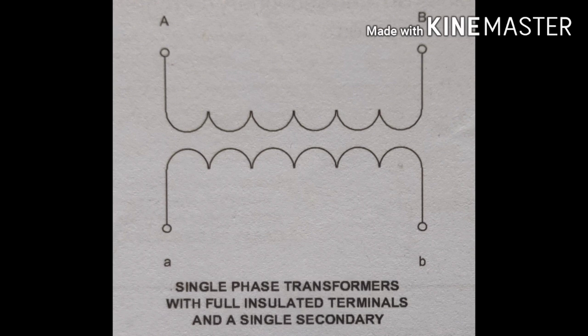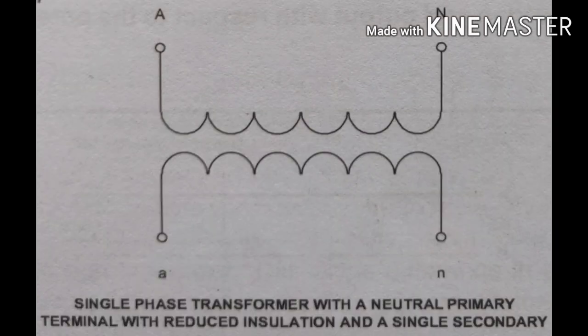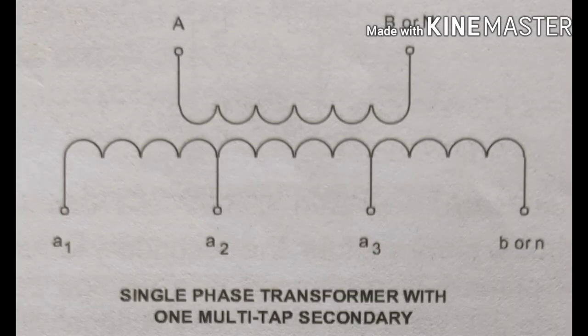Now we look at potential transformer nameplate details. There is a small AB secondary — a single secondary. This is a single-phase PT where a single primary coil has multiple tapping points in the secondary area.